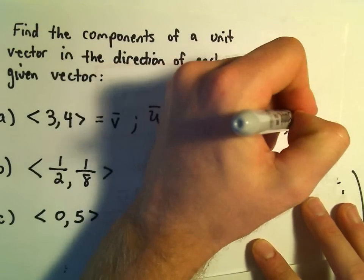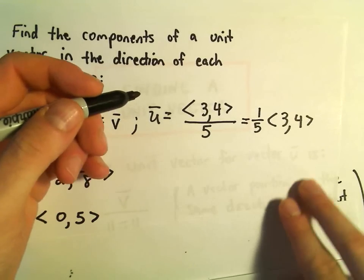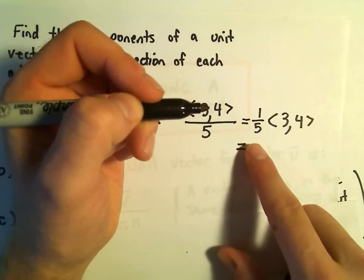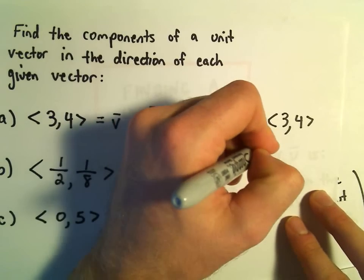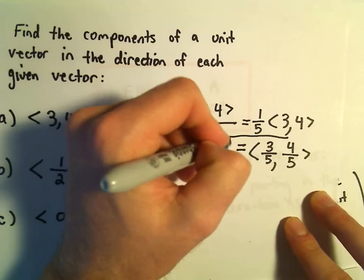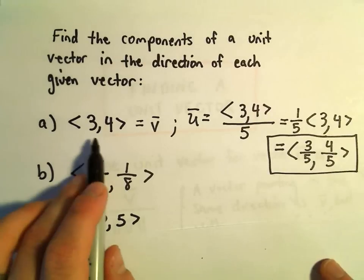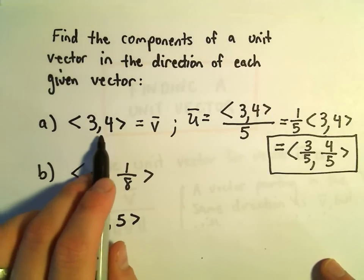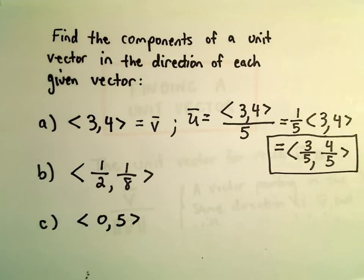We'll have 1/5 being multiplied by the vector with components 3, 4. If you have a real number out front, we just multiply it in. So we'll get 3/5 and 4/5, and that gives us our unit vector. It's pointing in the exact same direction as the original, but now it has a length of 1.